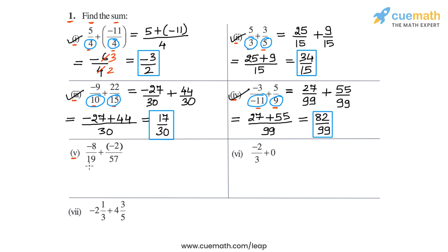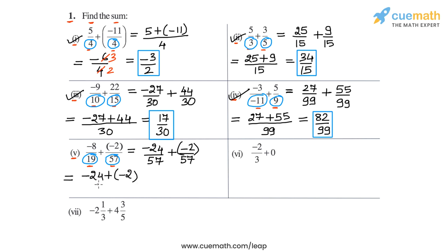Now we come to part 5, in which we have to calculate -8/19 + (-2/57). The denominators are 19 and 57. The LCM of these two is 57, because 19 times 3 is 57. So -8/19 can be written as -24/57, and the second number we leave as -2/57. Now we add the numerators: -24 + (-2) = -26. So we get -26/57. That completes part 5.